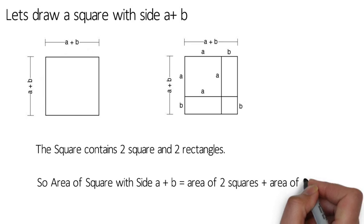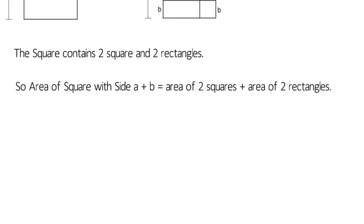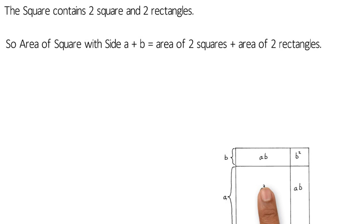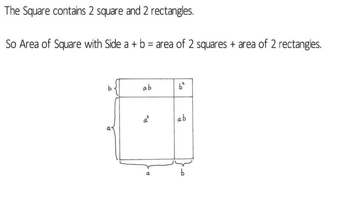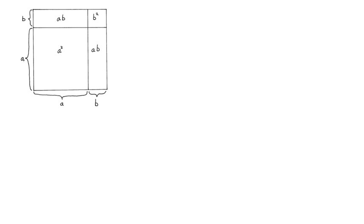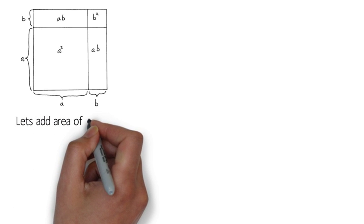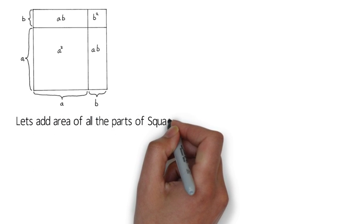So the area of the square with side a+b will be the area of these two squares and two rectangles. The area of the two squares will be a² and b², and the area of the rectangles will be ab and ab.